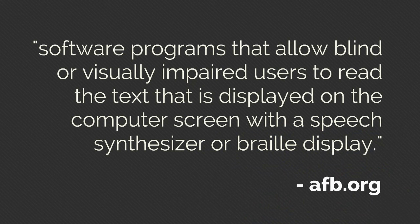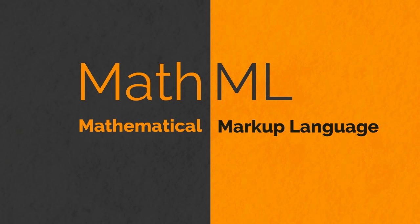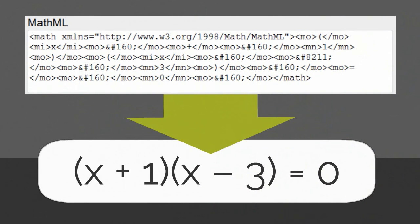The ideal method for making equations accessible is to use mathematical markup language, known as MathML, instead of image files. Browsers that support MathML are able to read and translate markup language into properly formatted equations.